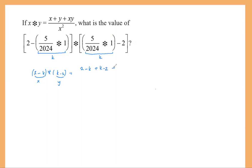Then we have plus X times Y, which is (2 minus K) times (K minus 2), all divided by X squared, which is (2 minus K) squared. So the rest is manipulation, but we have a lot of nice cancellations. These terms add up to zero, and we're left with (2 minus K) times (K minus 2) over (2 minus K) squared.